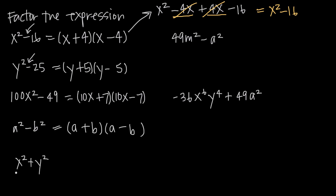Here we have x squared plus y squared — this is where we have to be careful. We have two perfect squares: x squared is a perfect square and y squared is a perfect square, but they're added together. We don't have the difference; we have the sum. Neither one is negative, so we can't factor this as the difference of two squares.